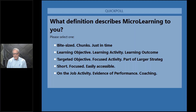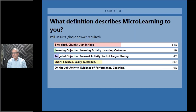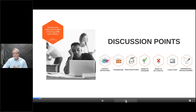The poll is up on the screen right now. 54% of our audience says bite-sized chunks, just in time. 39% says short, focused, and easily accessible. 4% said targeted objective-focused activity. 2% said learning objective, learning activity, etc. Nobody said the last one: on-the-job activity, evidence of performing or coaching.